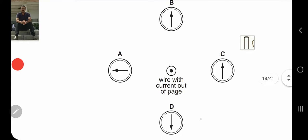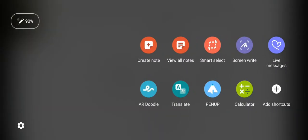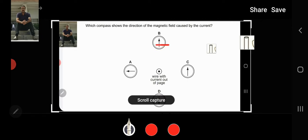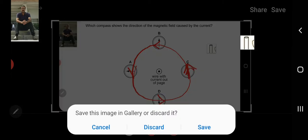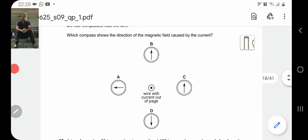I will draw a line. These lines follow a pattern. The compass will follow this magnetic field line. It will look like the compass direction is this way. The right option will be C.